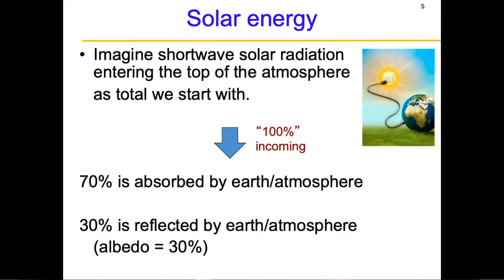Let us assume that solar radiation enters from the top of the atmosphere and that 100% of the radiation is coming in from the sun. This is short wave radiation because the temperature of the sun is very large — temperature and wavelength are inversely proportional, so larger temperature means shorter wavelength. 70% of that incoming radiation is absorbed by the earth and atmosphere, and 30% is reflected back to space — this is known as albedo, due to the presence of clouds, snow, or reflective surfaces.